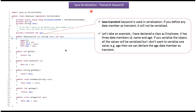Hi, in this video tutorial I will cover Java Serialization with the Transient keyword. The transient keyword is used in serialization. If you define any data member as transient, then it will not be serialized.